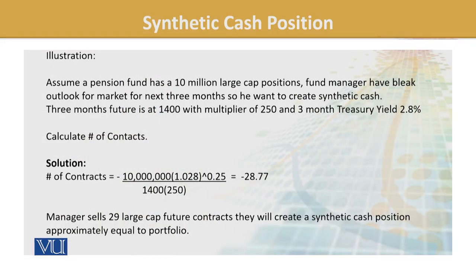Using the formula with the same data: we start with the minus sign. Portfolio value is 10 million, multiplied by (1 + risk-free rate) to the power of the period — 3 months means t = 1/4 = 0.25. The futures price is 1400 and the multiplier is 250. This gives us minus 28.07 contracts.